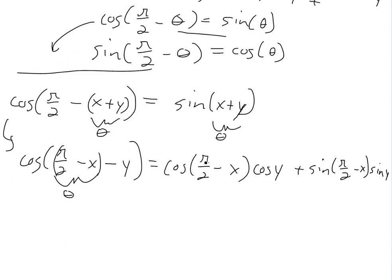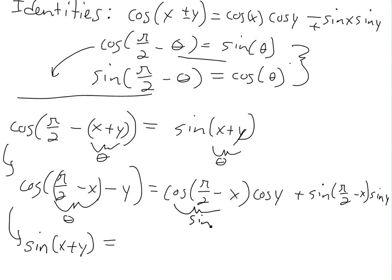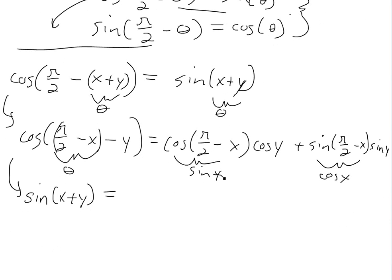Then if we use those two identities — cosine of pi over two minus x equals sine x, and sine of pi over two minus x equals cosine x — we substitute back in. So sine of x plus y equals sine x cosine y plus cosine x sine y. There's our proof.